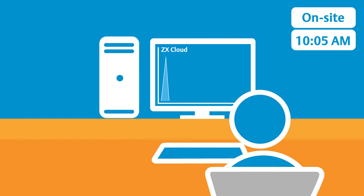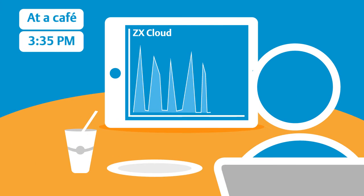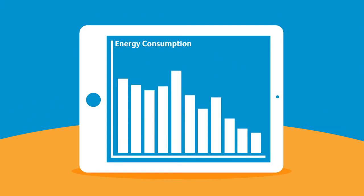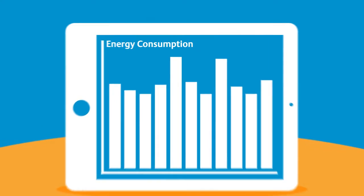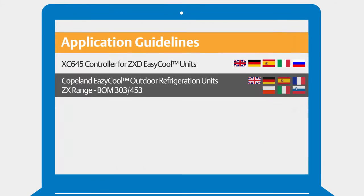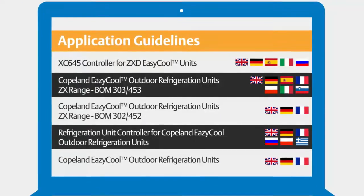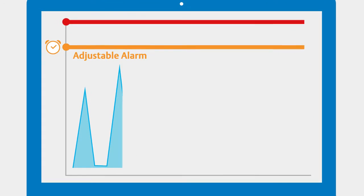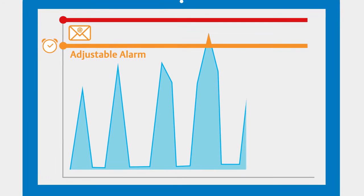With ZX Cloud, you can access your EasyCool ZX Refrigeration Unit anytime and anywhere, which helps reduce site visits. You can monitor energy consumption in real-time and take action if needed, making well-informed cost control decisions. You can save on service time with direct access to application guidelines and spare parts list, and prevent food spoilage through the adjustable alarm function that sends notifications before power consumption rises.